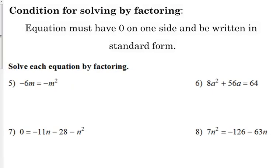So, the cardinal rule when you're solving by factoring: your equation must have zero on one side, and it needs to be written in standard form. That is rule number one, and it is cardinal sin number one when we start solving these things.